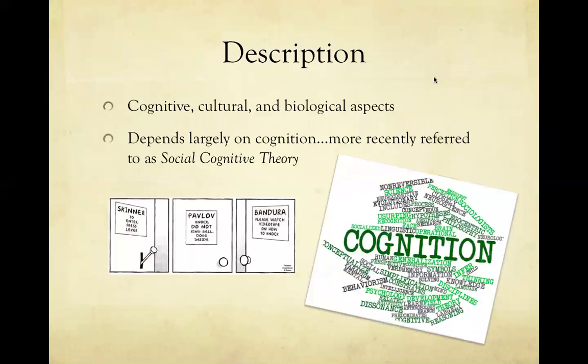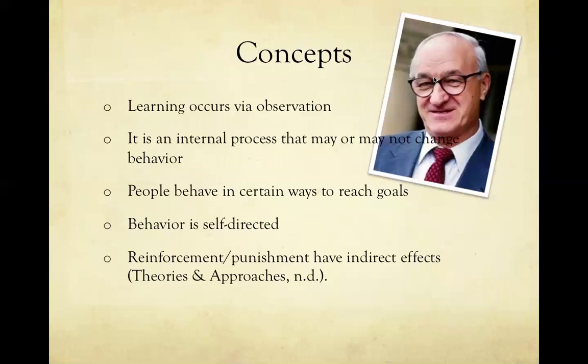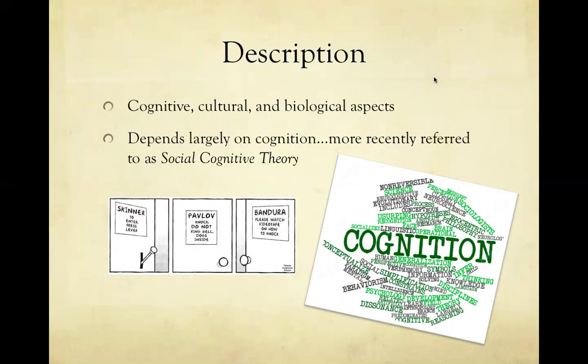Social learning theory includes cognitive, cultural, and biological aspects that strengthen the theory. It potentially explains how cultural behavior is passed on through observation. Biologically, mirror neurons play a role in imitation. The theory depends largely on cognition, and has been more recently referred to as social cognitive theory for this reason.